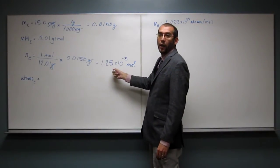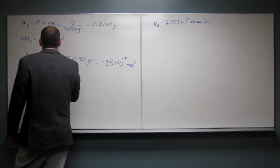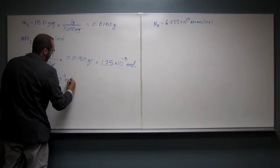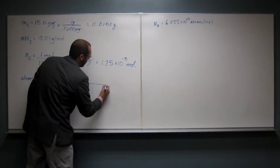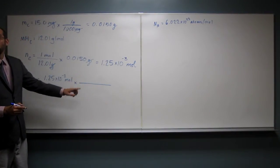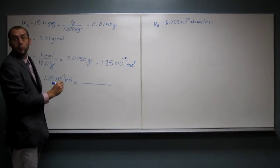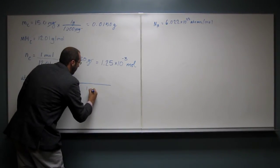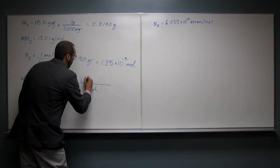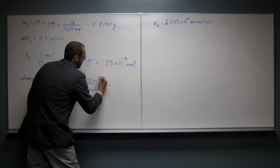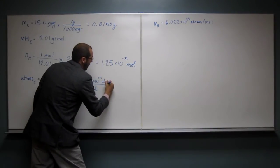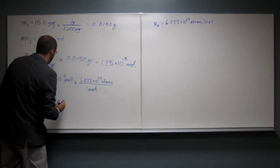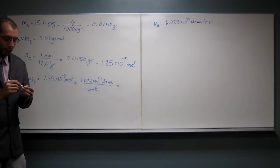So we know how many moles we've got. So let's write that down. 1.25 times 10 to the negative 3 moles. And we know how many atoms there are in one mole. Because it's 6.022 times 10 to the 23rd. So we want to put mole on the bottom so we'll cancel it out. So we've got one mole. 6.022 times 10 to the 23rd atoms. That makes sense, right? And then we just cancel.